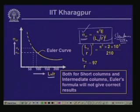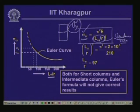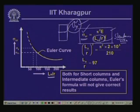For a column where the slenderness ratio is very low (short column), the critical stress is the yield stress — the member fails by yielding before buckling. Hence Euler's critical load formula has a limitation: beyond a certain value of L_e/r (below a limiting slenderness), we cannot apply the Euler's critical buckling load formula.